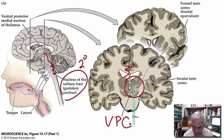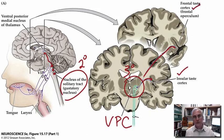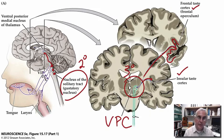Those third-order neurons provide input into the insular cortex. There are probably several zones within the insular cortex that receive this input — regions we might call primary gustatory cortex, or insular taste regions. In a more rostral position is the frontal taste cortex, which is really still part of the insular cortex. The insula is that part of the cortex folded and covered by the superior temporal gyrus, the inferior frontal gyrus, the inferior part of the precentral gyrus, and the inferior part of the postcentral gyrus.